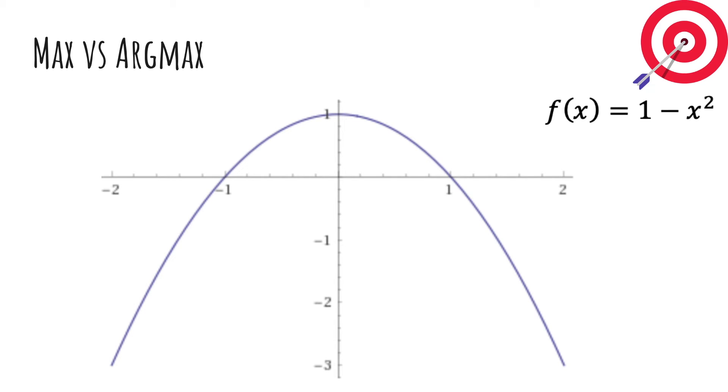One more bit of notation. The difference between max and argmax. Here's a function, 1 minus x squared. The maximum value is 1. That's like the highest value this function can ever achieve. The argmax is 0. And argmax just means the argument that maximizes the function. So which x actually achieved f of x equals 1? Well, that's x equals 0. And so in MLE, we're trying to find the theta that maximizes the likelihood. We don't care what the value of the likelihood is. We didn't compute it last time. We just cared that it was 4 fifths.